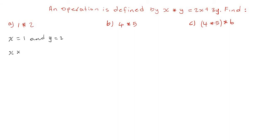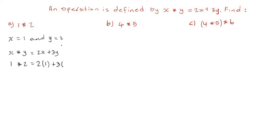We are given the operation x asterisk y is equal to 2x plus 3y, and we are asked to evaluate 1 asterisk 2. What we're going to do is replace these values into the operation. Instead of writing x, we put the value of x which is 1 in a bracket, put back the plus sign, put back the 3, and instead of writing y we write the value of y which is 2.